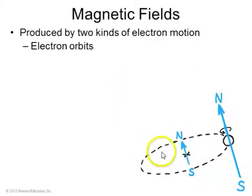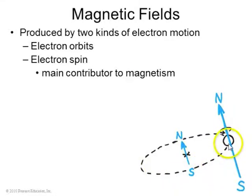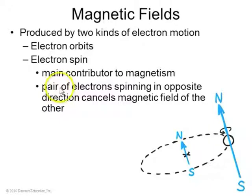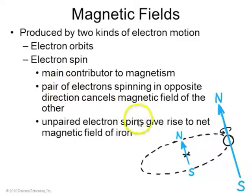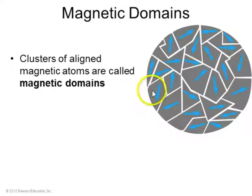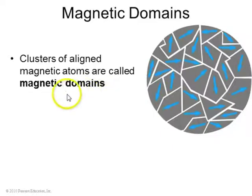Electrons in orbits can produce magnetic fields, and also just electrons spinning. In iron, the main contributor to the magnetic field is actually electron spins. In most materials, electron spins cancel each other out in pairs of up spins and down spins. But in iron, you can have unpaired electron spins that give rise to a net magnetic field. Neighboring iron atoms tend to align their unpaired electron spins so that big regions of iron all have their spins in the same direction — that's called a magnetic domain.